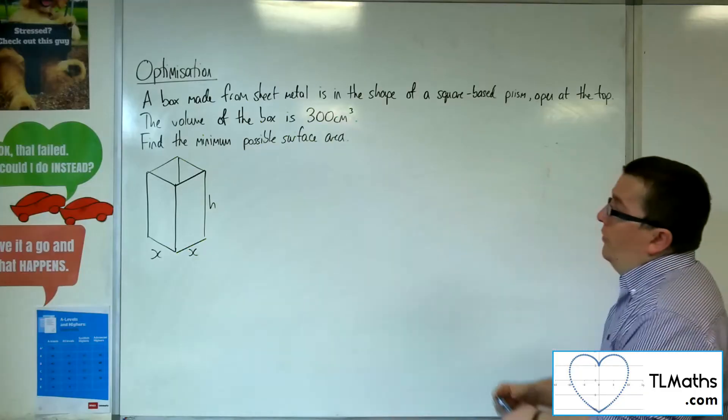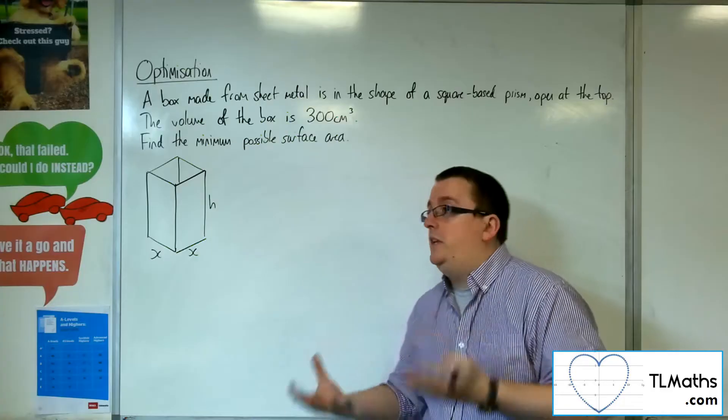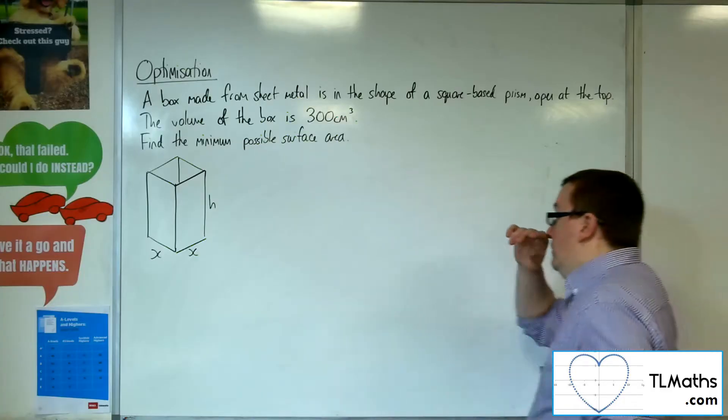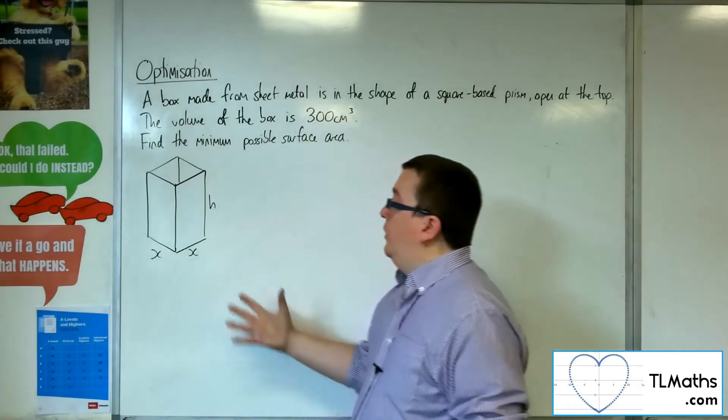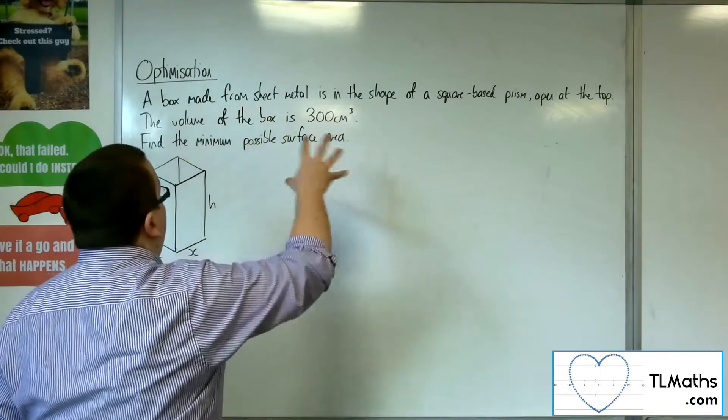So we want the volume to be a certain amount, but we want to minimize the amount of sheet metal that we utilize here. This is the diagram that we've got. What we want to do then is look at what we're given.